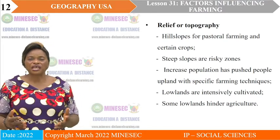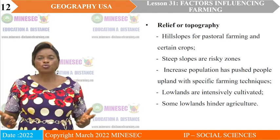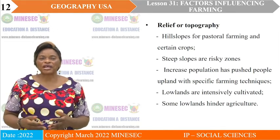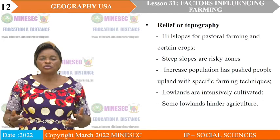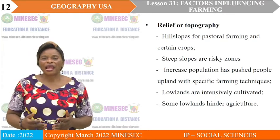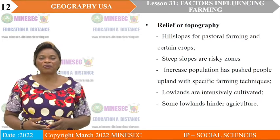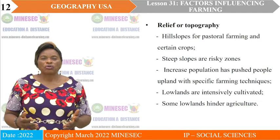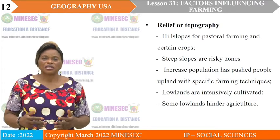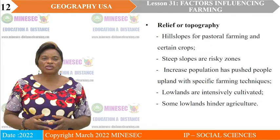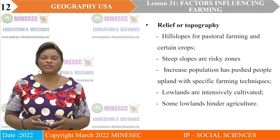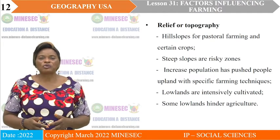Population pressure has pushed people to upland areas. In Cameroon, on the Mandara Mountains, people who did not want to be Islamized during the jihads fled up there, and government efforts to bring them down have not been very effective. These people use specific techniques like terracing to carry out cultivation. Farming in those areas is difficult, but since they have been there for long, they have adapted.